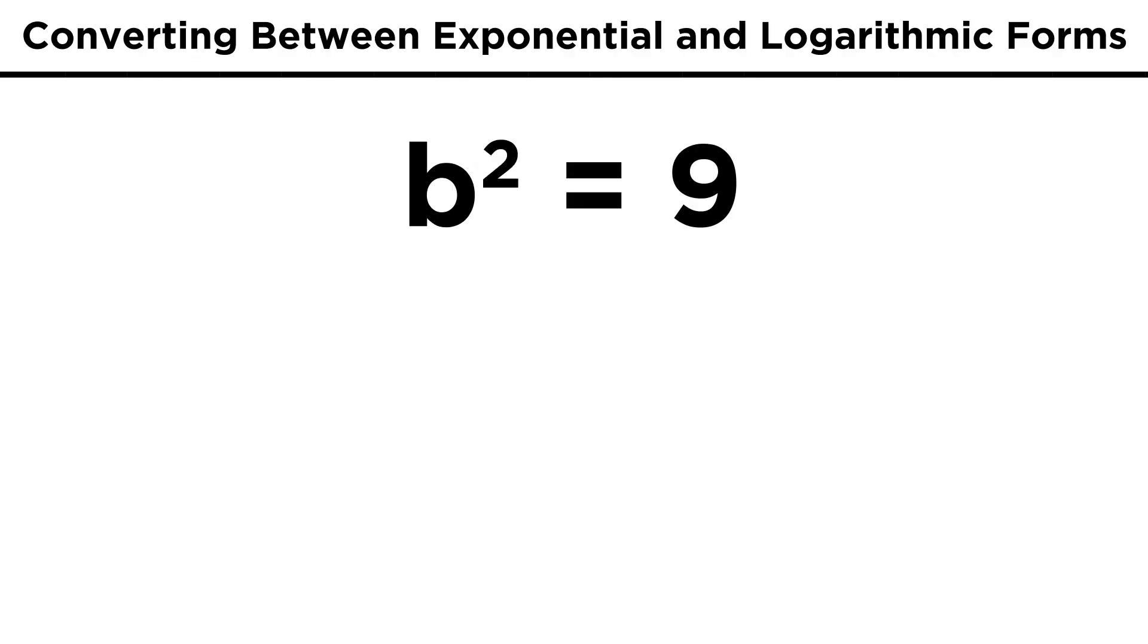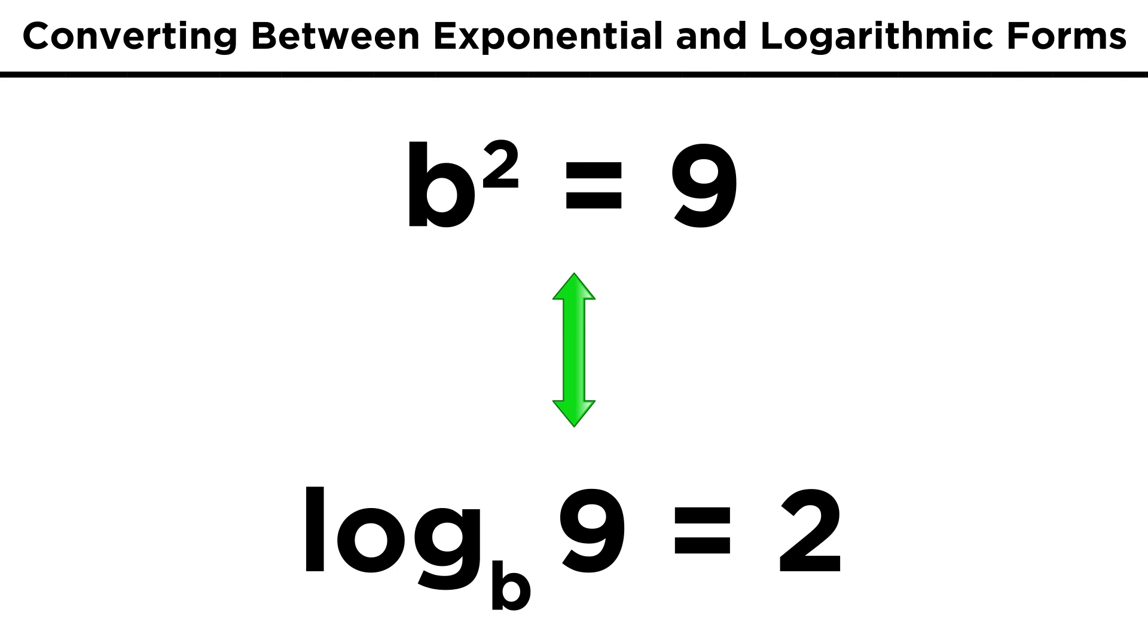We should also be able to convert between exponential and logarithmic forms of functions. If we have b squared equals nine, we should be able to write this as log base b of nine equals two, because this is the same as this base b being raised to the second power to get this number, nine.